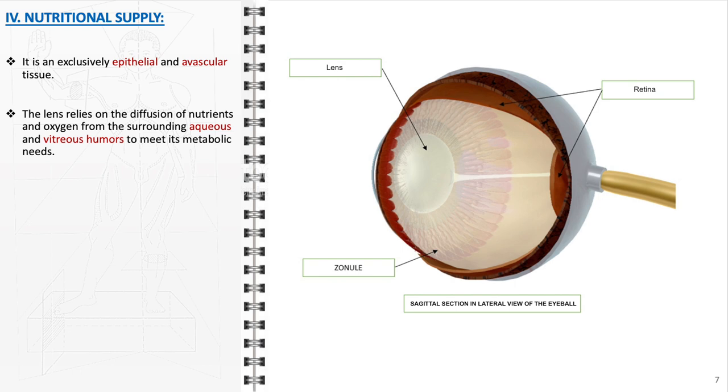The aqueous humor, in particular, is rich in nutrients and oxygen, and its continuous circulation helps in delivering these essential elements to the lens. The vitreous humor, a gel-like substance filling the space behind the lens, also plays a role in the metabolic support of the lens, although to a lesser extent than the aqueous humor. This process is vital for maintaining the lens's transparency and health. The avascular nature of the lens is also key to its function, as blood vessels could interfere with the passage of light, leading to vision impairment.